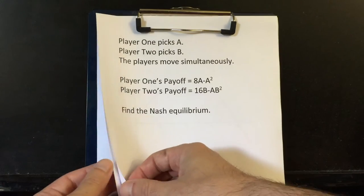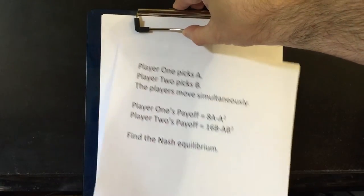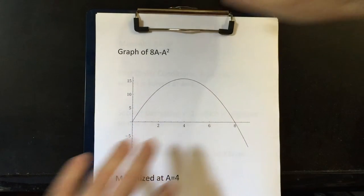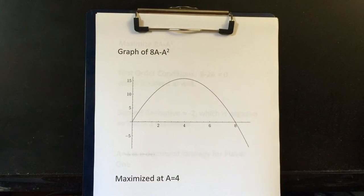Let's start with what player one should do. Now, player one has it easy because player one's payoff is not influenced by what player two does. Player one, for all intents and purposes, is playing a game by herself.